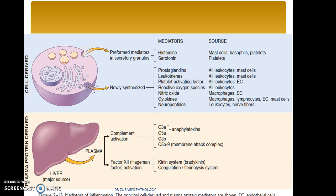A quick recall: in the last video we studied that chemical mediators are of two types — cell-derived and plasma protein-derived. In the cell-derived chemical mediators, we have the preformed mediators, of which histamine and serotonin are examples. And there are newly synthesized or de novo chemical mediators, of which we have prostaglandins, leukotrienes, platelet activating factor, reactive oxygen species, nitric oxide, cytokines, and neuropeptides. Today, we will be focusing on plasma protein-derived chemical mediators, of which the liver is a major source.